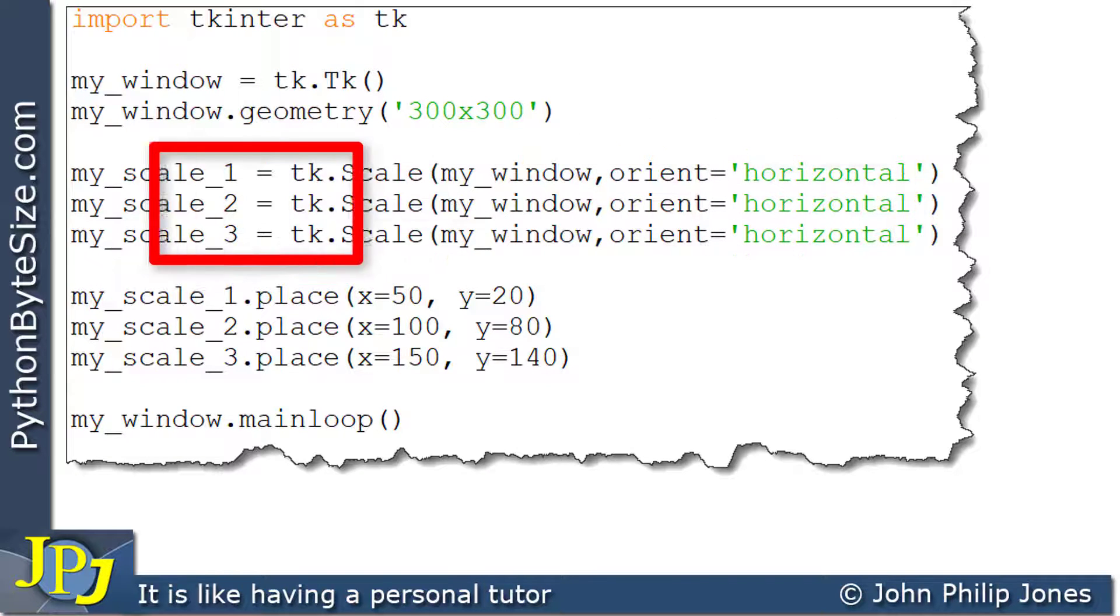This means that these three names are bound to their own instance of the scale widget, and each of them are horizontal.